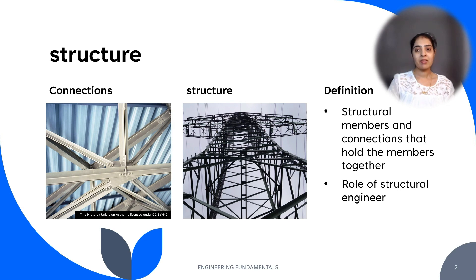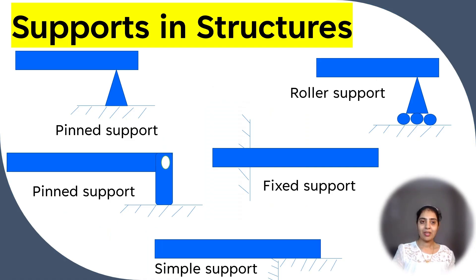The principal components in a steel building frame are structural members and the connections that hold the members together. The role of the structural engineer is to determine the arrangement and size of these components to ensure the most safe, efficient, and economical use of materials. The three common types of connections which join a built structure to its foundation are roller, pin, and fixed. A fourth type, not often found in building structures, is known as a simple support, often idealized as a frictionless surface.